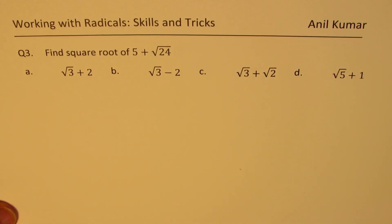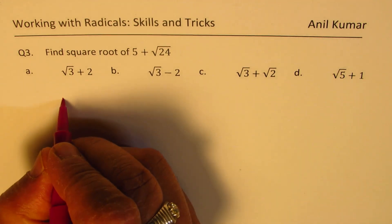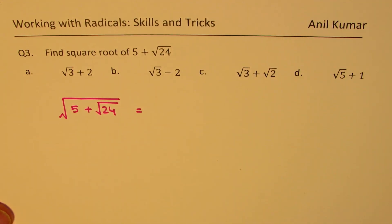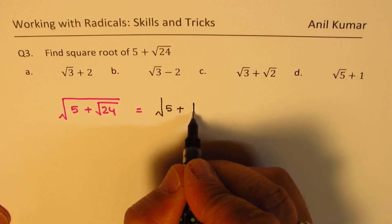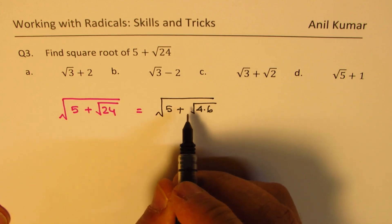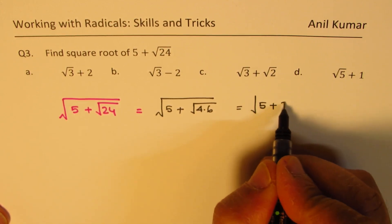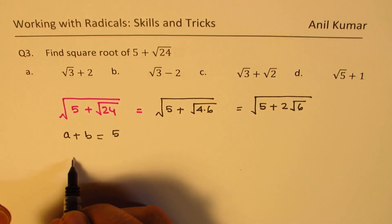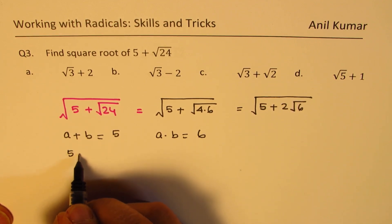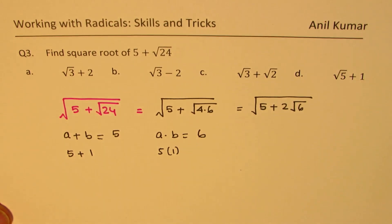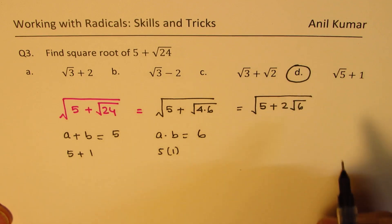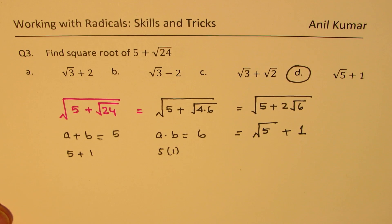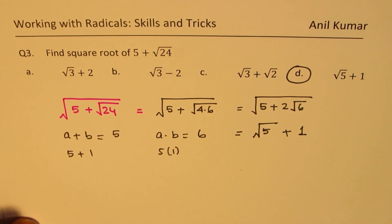Now find square root of 5 plus square root of 24. We rewrite square root of 24 as square root of 4 times 6, which gives 2 square root of 6. So this becomes 5 plus 2 square root of 6. The two numbers whose sum is 5 and product is 6 are... 3 and 2? No — we need sum 5 and product 6, so the numbers are 3 and 2. Wait — the numbers are actually such that we want sum 5 and product 6, giving us square root of 5 plus square root of 1. The answer is option D: square root of 5 plus 1.